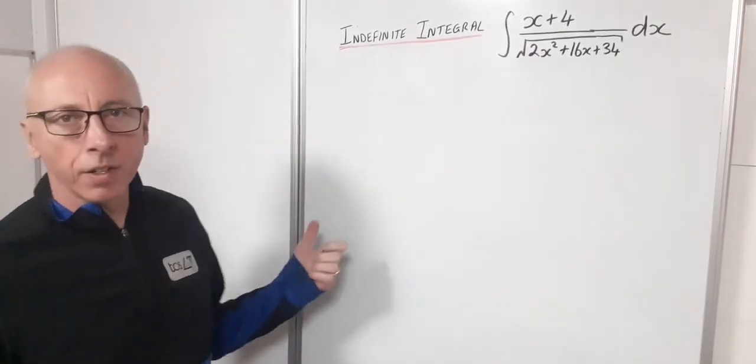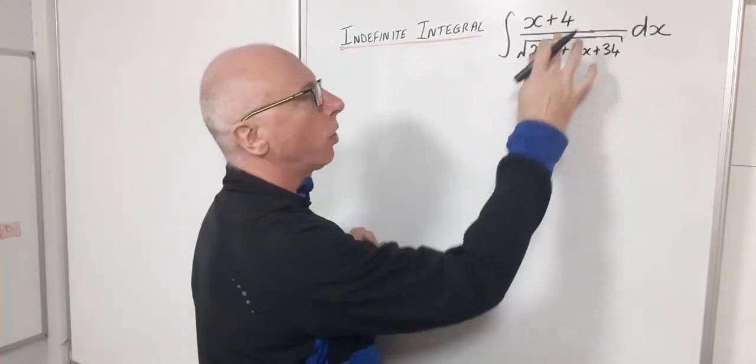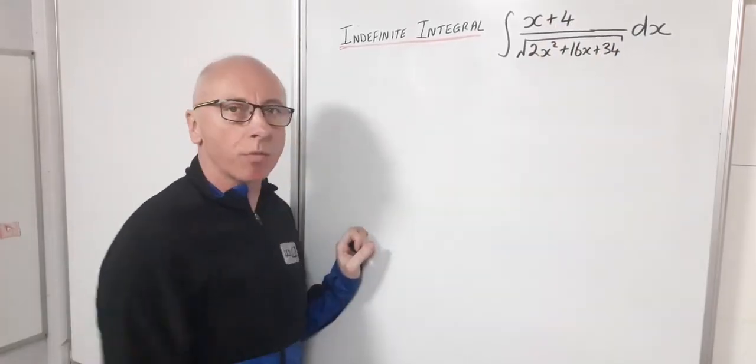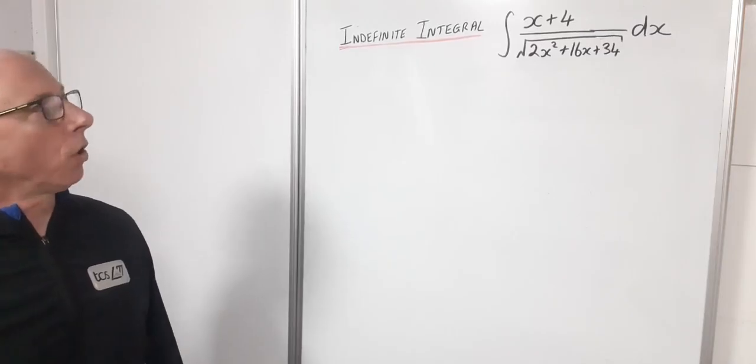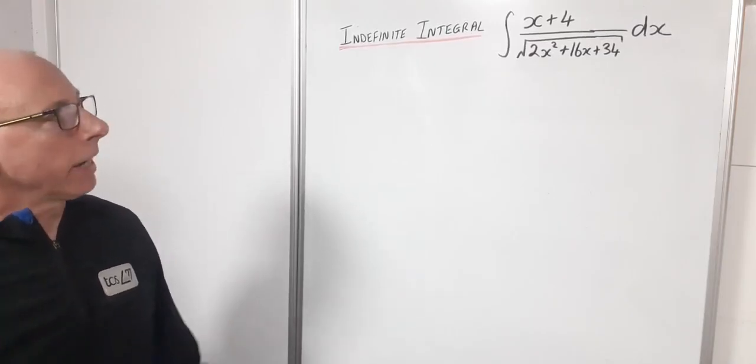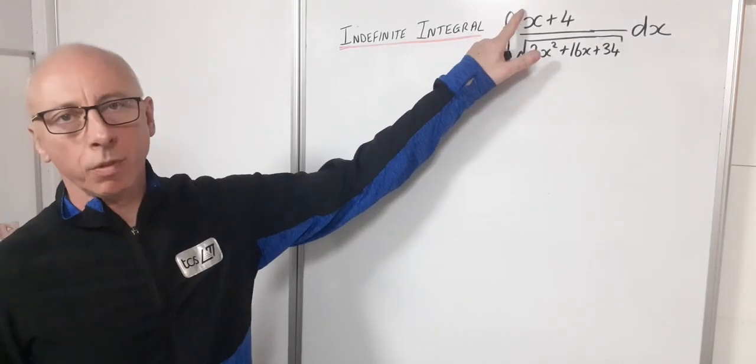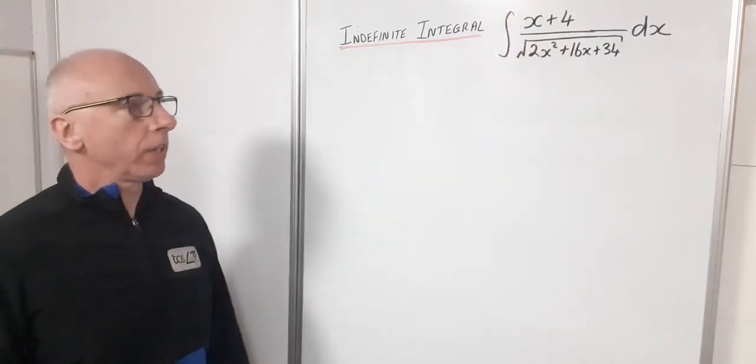Okay, so this question we've got an indefinite integral of x plus 4 over the square root of this quadratic 2x squared plus 16x plus 34 all with regards to x. Now you notice the indefinite integral we've got no boundaries of integration.